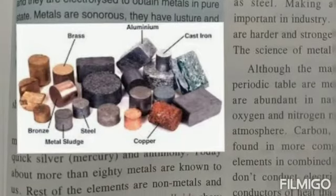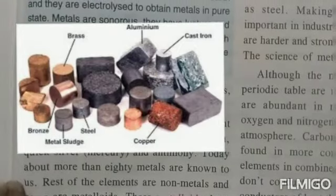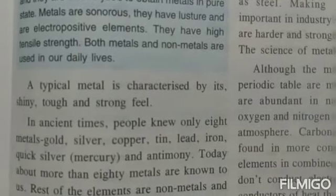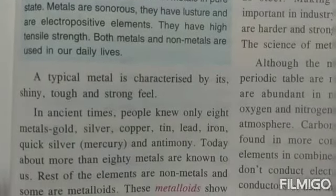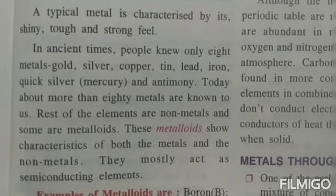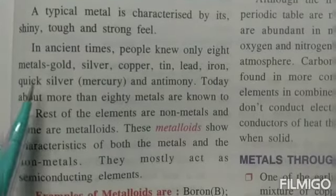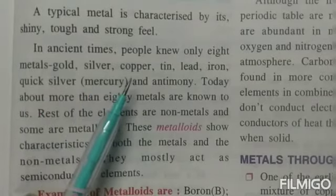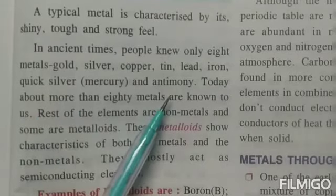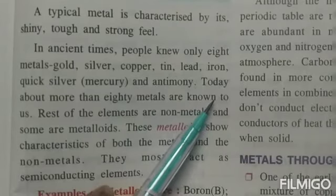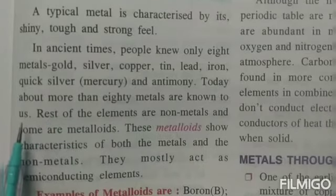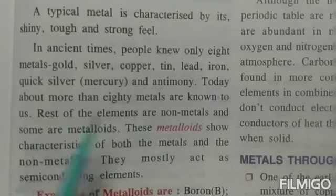A typical metal is characterized by its shine — metals shine and are tough, meaning very strong. In ancient times, people knew only eight metals: gold, silver, copper, tin, lead, iron, quicksilver (known as mercury), and antimony. But today the picture is different — more than 80 metals are known to man. The rest of the elements are nonmetals, and some are also metalloids.